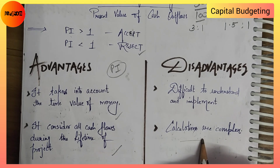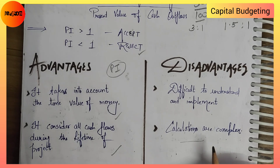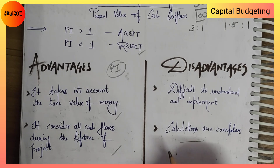One disadvantage is that the calculations will be complex in comparison to the calculations performed in the earlier methods. So these were the disadvantages of the profitability index method.